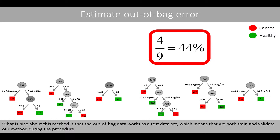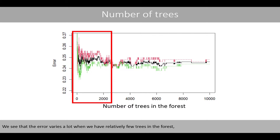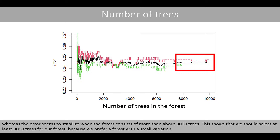What is nice about this method is that the out-of-bag data works as a test dataset, meaning we both train and validate our method during the procedure. To know how many trees we should have in our forest, we can study how the out-of-bag error changes as the number of trees increases. The error varies a lot with relatively few trees, whereas it stabilizes when the forest consists of more than 8000 trees, showing that we should select at least 8000 trees for a small variation.